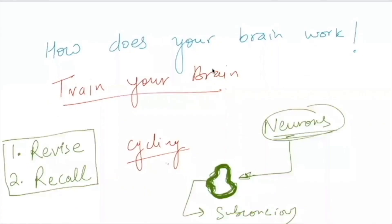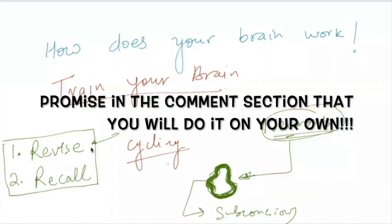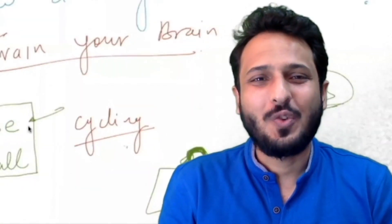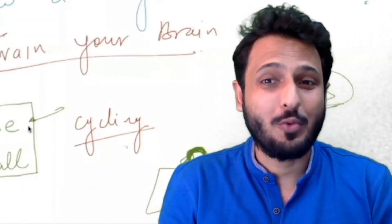There are only two steps to learn anything new: revise and recall. If you want to train your brain to learn financial modeling, you need to revise. It's not like you're going to watch this like a movie. The proper way is to go back, revise, try to recall what we did in the session, try to do it on an Excel sheet, and make Excel your friend.